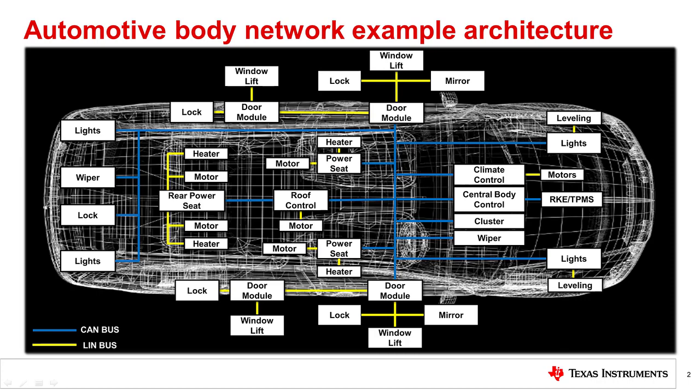Wire is one of the most expensive components in a car. It is heavy and often assembled by hand, so wiring has a direct impact on an automobile's overall cost of production. Automobile designers use CAN to minimize wiring in the car, reducing manufacturing costs and improving fuel efficiency.